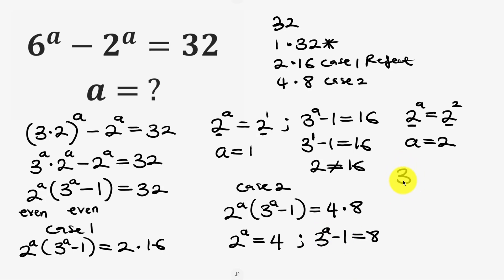So if a is 2 let's slot that in here. This is 3 to power a, a is 2, minus 1 equal to 8. 3 squared is 9 minus 1 equal to 8. So 9 minus 1 is 8 which is equal to the right hand side 8. That means a equal to 2 is a solution.